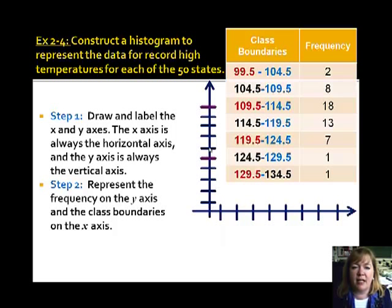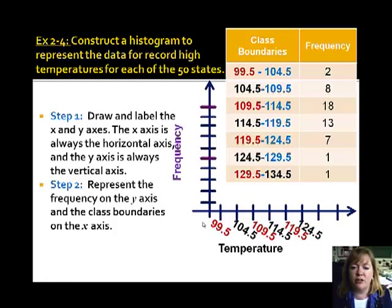2, 4, 6, 8, 10, 12, 14, 16, 18, 20. But as I said before, let's label what these mean. So on the x axis, that's talking about temperature. On the y axis, this one is talking about frequency, or how many states fall into that range. So now we're ready to draw rectangles.